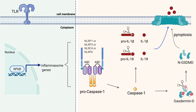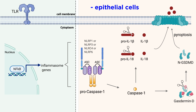It is currently understood that IL-1 beta and IL-18 are released through gasdermin D pores. Inflammasomes have been most widely studied in myeloid cells like macrophages and dendritic cells, but there has been growing appreciation for inflammasome activation in epithelial cells, which line the surfaces of the body that interface with the outside world.